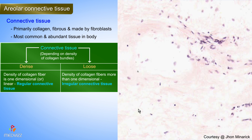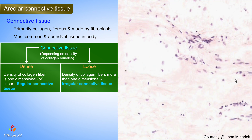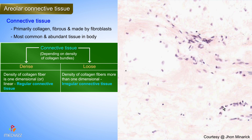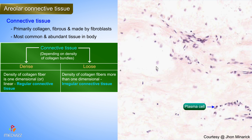Loose connective tissue is more likely to have other types of cells, however. If the cell is round, the most likely cell it would be is a lymphocyte, especially if it has minimal to almost zero cytoplasm. If the nucleus is eccentric, that's more likely to be a plasma cell, although there are other classical features of plasma cells.